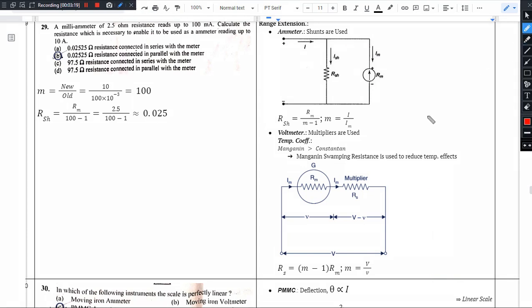Next, voltmeter range extension. My meter measures voltage Vm only, but I need to measure voltage Vn which is much greater than Vm. The multiplying factor is what you want to measure divided by what the instrument can measure. In shunt case we bypass current, in multiplier case we drop voltage.